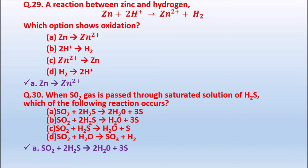Question 30: When sulfur dioxide gas (SO₂) is passed through a saturated solution of hydrogen sulfide (H₂S), which reaction occurs? Option A: SO₂ + 2H₂S → 2H₂O + 3S. Option B: SO₂ + 2H₂S → S₂O + 3S. Option C: SO₂ + 2H₂S → 2S₂O + 3S. The correct answer is A — SO₂ + 2H₂S → 2H₂O + 3S, which is the correct and balanced reaction.